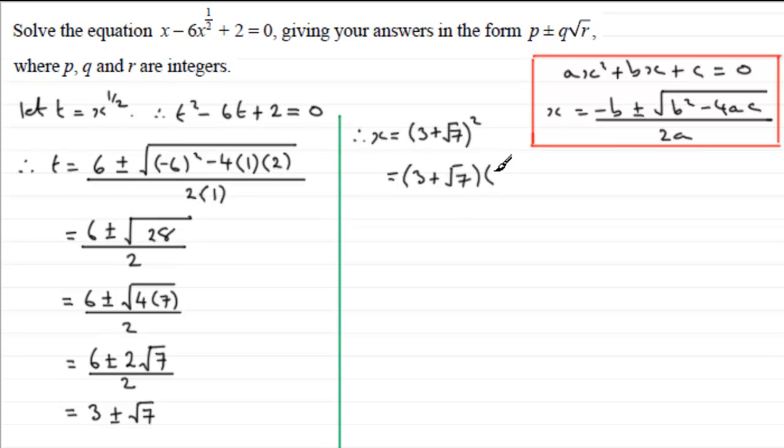And if we do that, that's going to be 3 plus root 7 multiplied by another 3 plus root 7. And expanding this in the usual way we're going to have 3 times 3 is 9, plus 3 root 7 plus another 3 root 7 so it's going to be plus 6 root 7, and then we've got root 7 multiplied by root 7 which is going to be root of 49 which is 7. And then this is equal to 9 and 7 which is 16 plus 6 root 7.